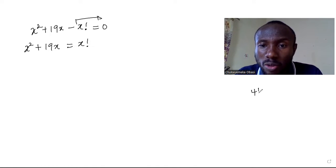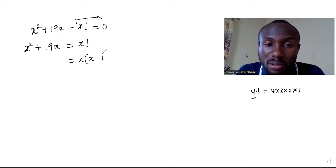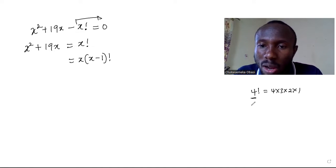You know what factorial is, right? If you have four factorial, you have four times three times two times one, so you're reducing these integers by one until you get to one. So x factorial would be something like x into x minus one factorial.